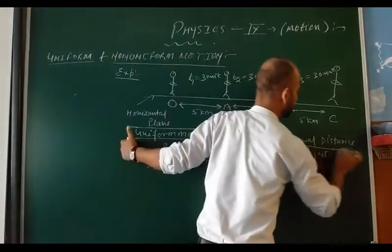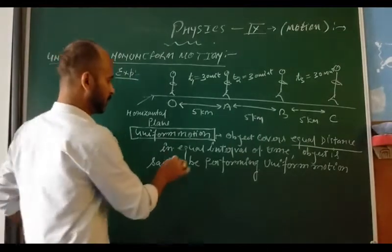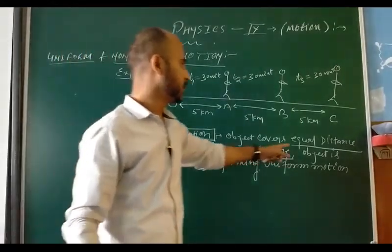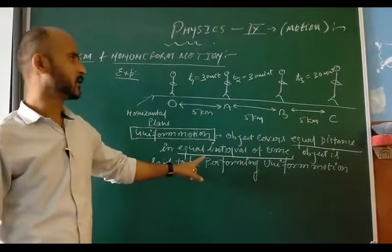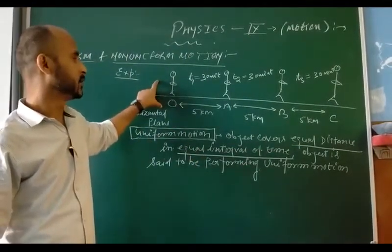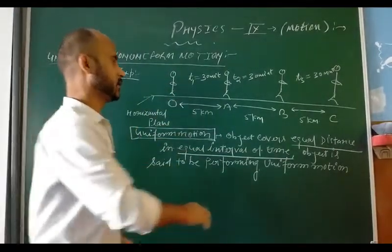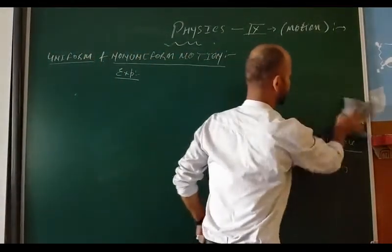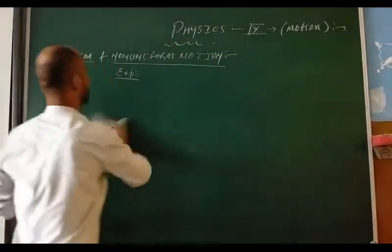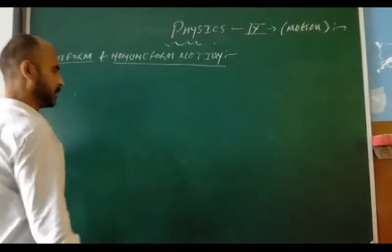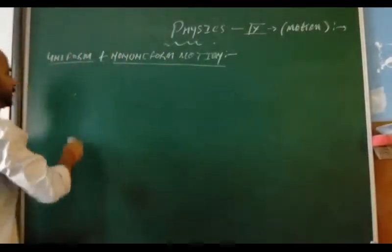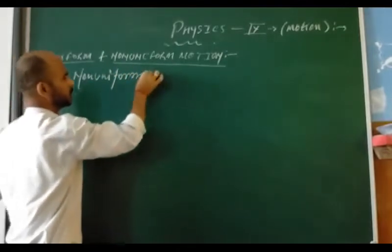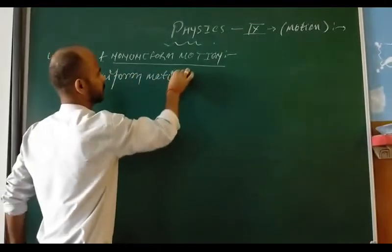The key point is: if an object covers equal distance in equal interval of time, then you can say that the object is performing uniform motion. Now again we have to discuss non-uniform motion — how can we explain it with an example.